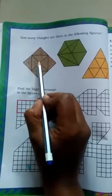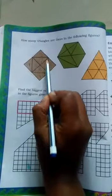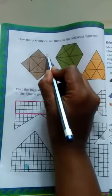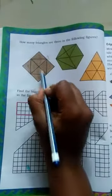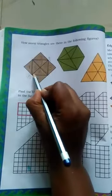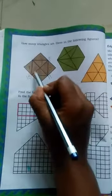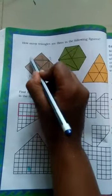And if you see carefully, look at this, one more triangle. That is nine. And this opposite side. Ten. This one. Eleven. And this one. Twelve.